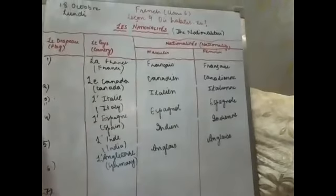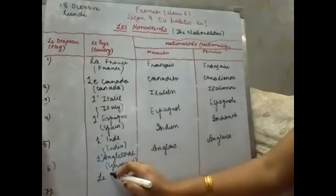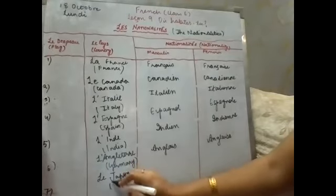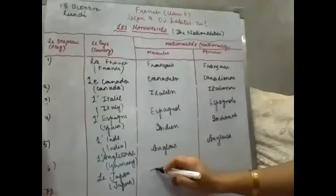Next is Japan, le Japon, that is Japan, and the nationality will be Japonais and Japonaise.